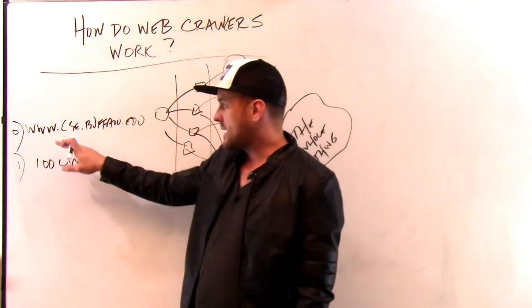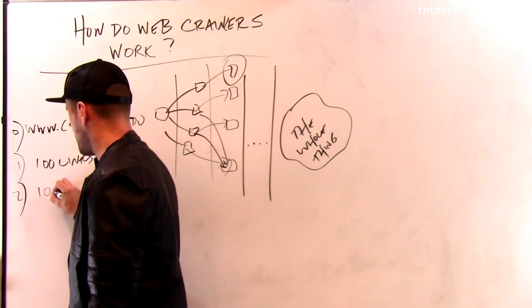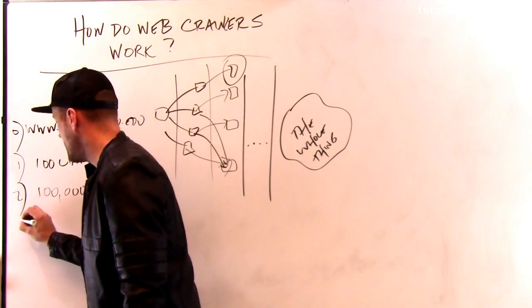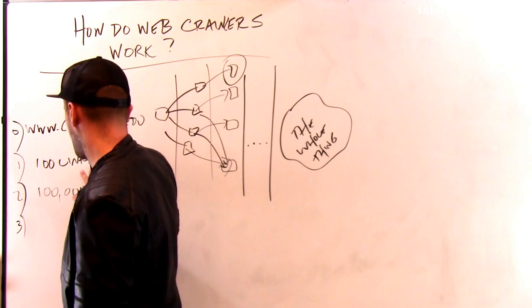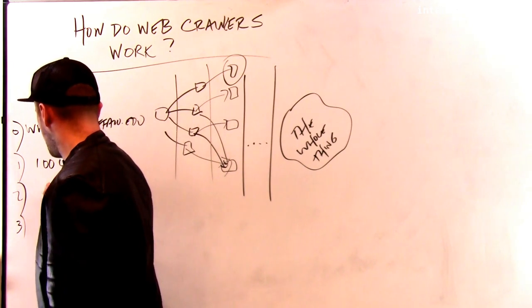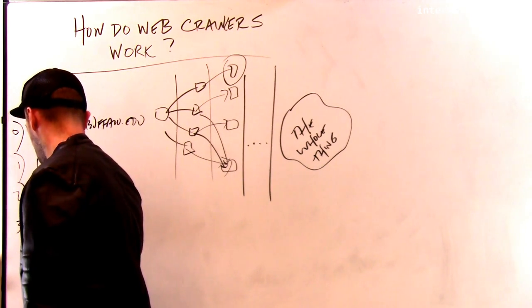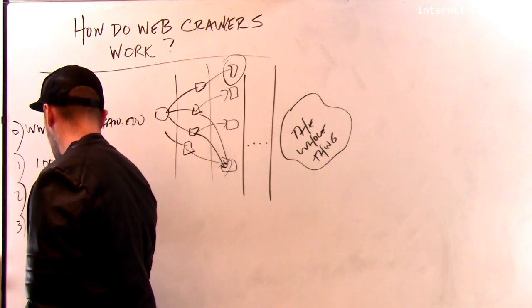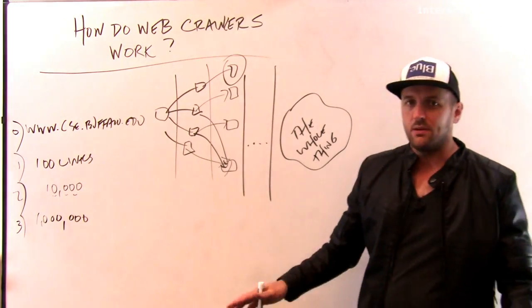I suspect that real web crawlers probably have—so in the second step I might have 100,000 links to follow. And in the third step, maybe, if each page has 100 links on it, in the second step I have 100, then I have 10,000, and then I have a million. So you can see how this goes. In just a couple of steps, I found a million pages. That's pretty good.